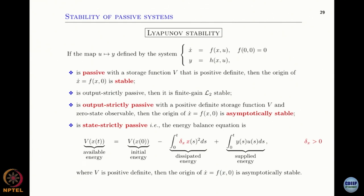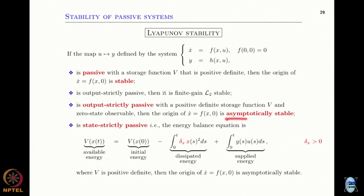Think of the pendulum without friction: it will just oscillate — that is a stable behavior, it keeps oscillating. If there is friction, then we have output strict passivity, which means there is friction in the system, and then the system will be asymptotically stable.